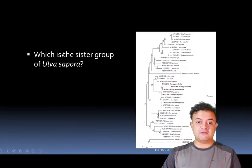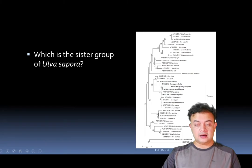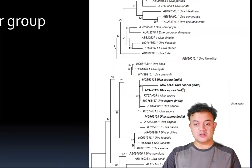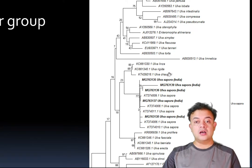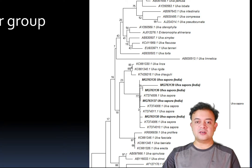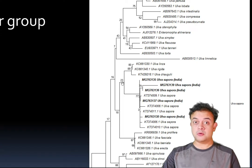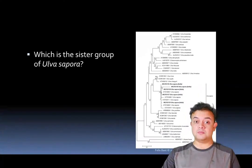Second quiz: Which is the sister group of Ulva sapora? Ulva sapora forms one clade, and its sister group — descended from the same ancestral speciation event — is the clade containing Ulva linsa, Ulva rigida, and Ulva chaguli. These two clades are sister taxa to each other.